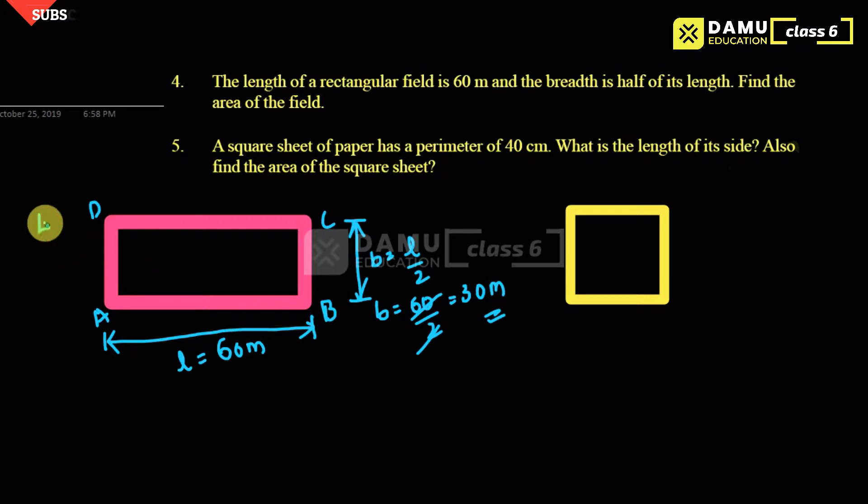So this is our fourth one. I am writing the solution. We got length and breadth, now what we have to calculate? We have to calculate the area of the field. So we have to find the area of rectangle ABCD.